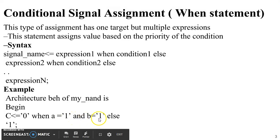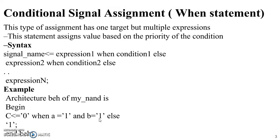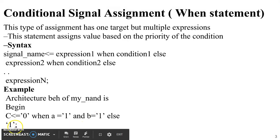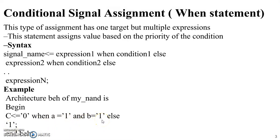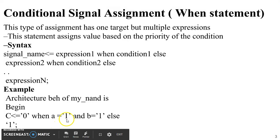For example, C will be assigned a value 0 when the complex condition A equal to 1 AND B equal to 1 is true; else when the expression is false, the value assigned to C will be 1. For all other circumstances when the condition is false — B may be 0, A may be 0, or both — the value assigned to C will be 1. This represents a NAND gate written using a when-else statement.